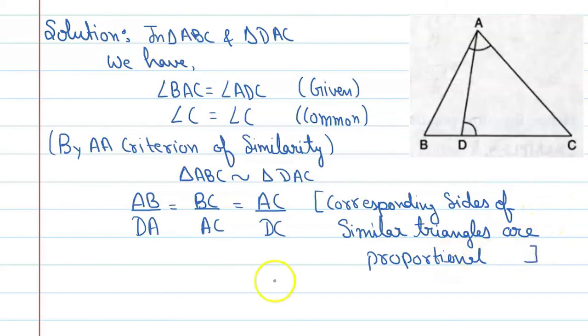Hence, CA upon CD is equal to CB upon CA.